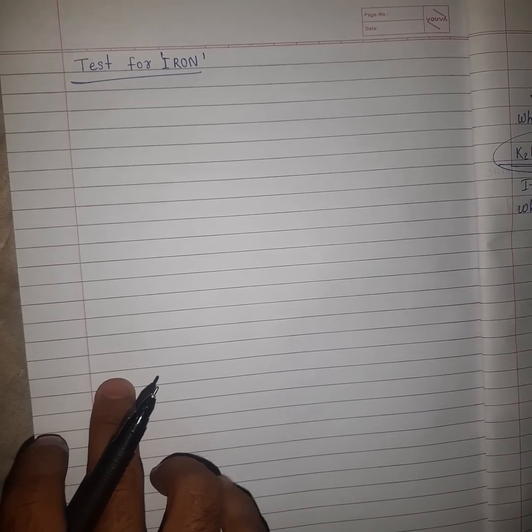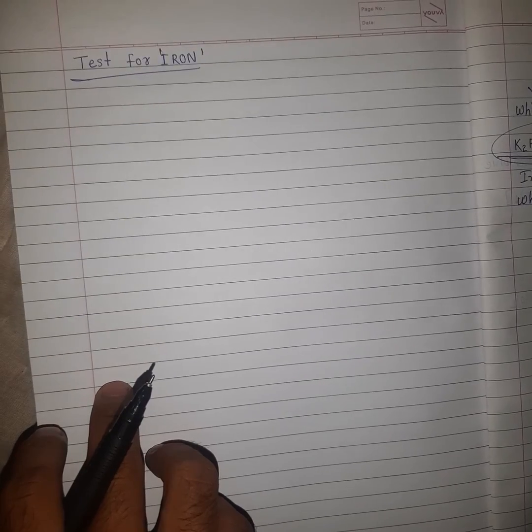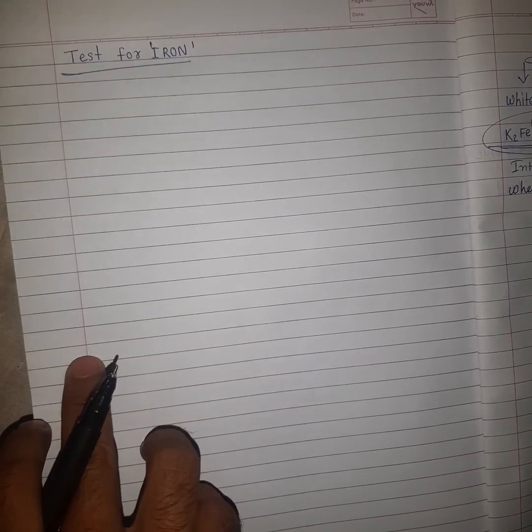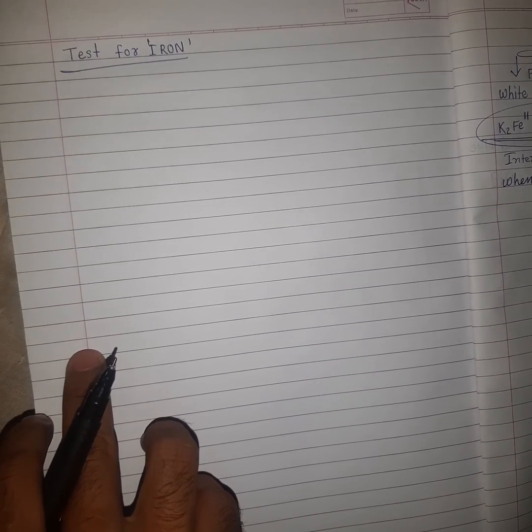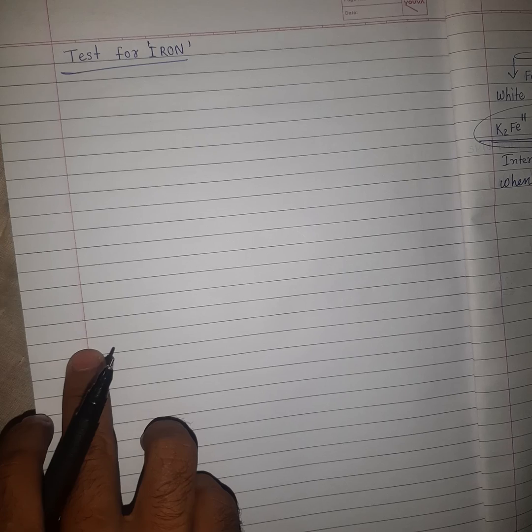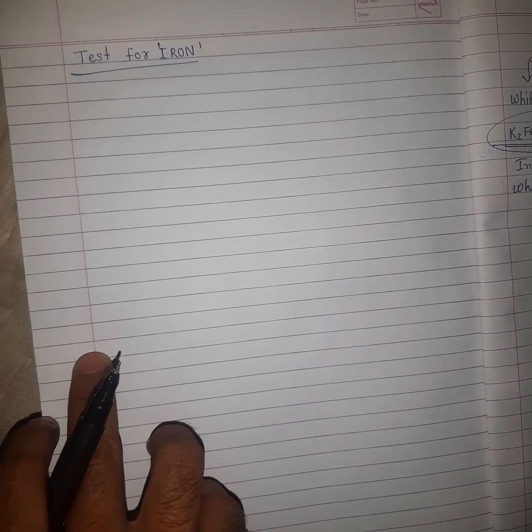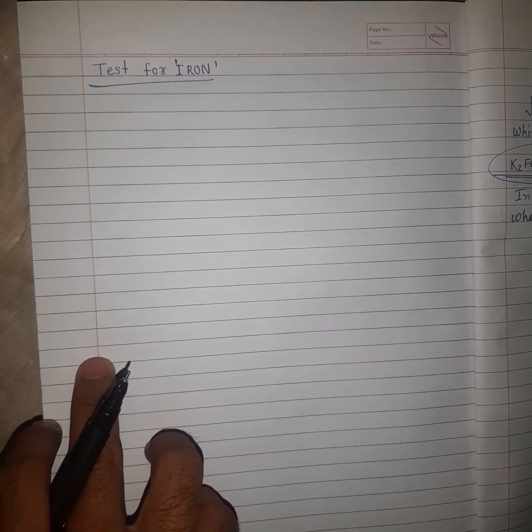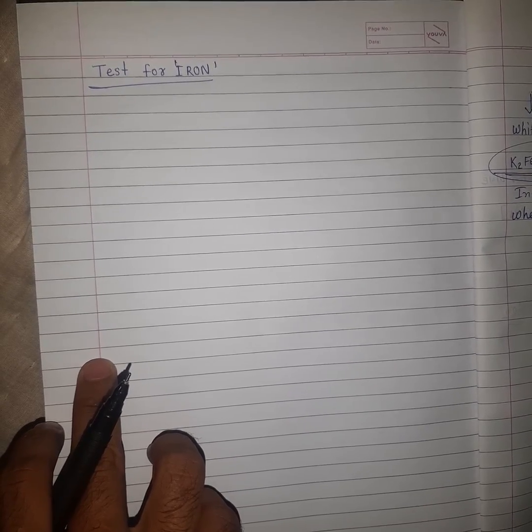Hello friends, when Fe2+ and Fe3+ both iron ions are present in the solution, how can we say which one iron is present in the solution? Potassium ferrocyanide is used to distinguish these ions.